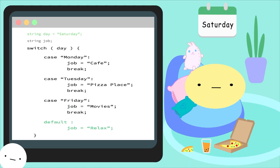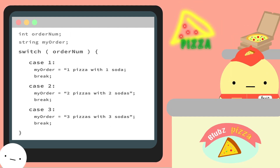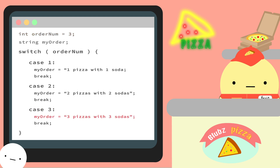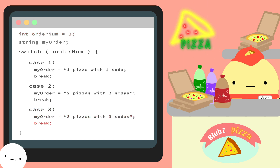Here's another example but with numbers. Let's say we're trying to order a combo meal from Blub's Pizza. We have a variable to tell our switch statement the combo number we want, and a variable to store our order. If our combo number is one, we'll get one pizza with a soda and our code will break out of the switch case. If our combo number is two, we'll get two pizzas with two sodas, then break. And if our combo number is three, we'll get three pizzas with three sodas, then break. Notice we don't include a default case here — if the switch statement checks for a number that doesn't have a corresponding case, it'll just skip over the switch statement entirely.